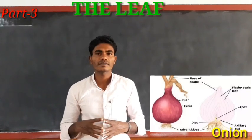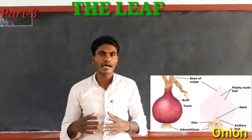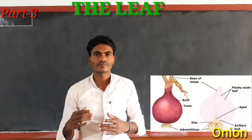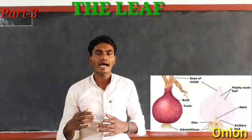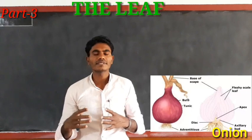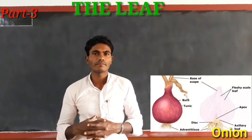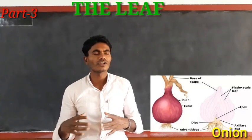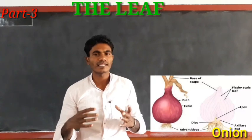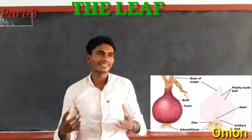In onion, the leaves are modified to store food, and they become fleshy. Please look at the onion structure on your screen — the leaves are modified into these fleshy, food-storing structures.